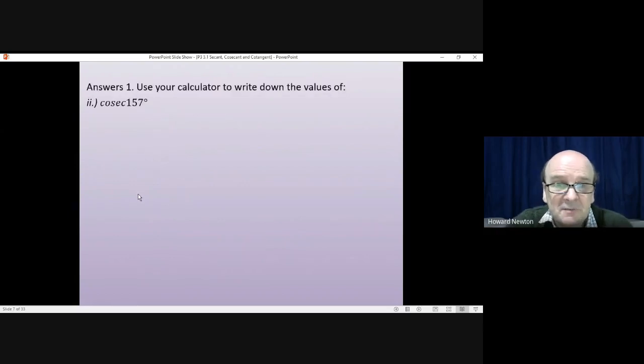Second question, cosec of 157 degrees. Cosec is 1 over sine, so that'll be 1 over the sine of 157. Look that up, and that's what you should get. 1 divided by that is about 2.56, again, to three significant figures.